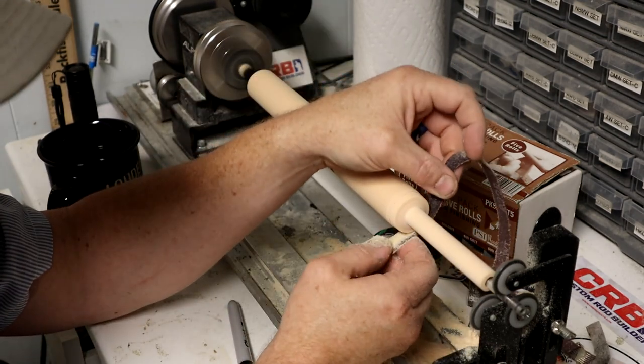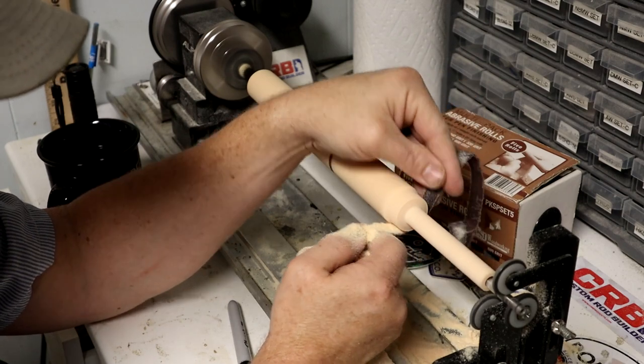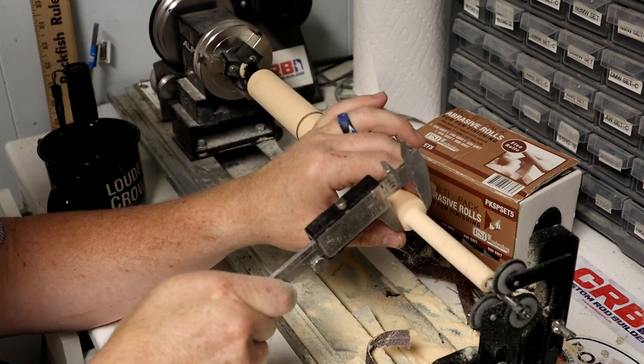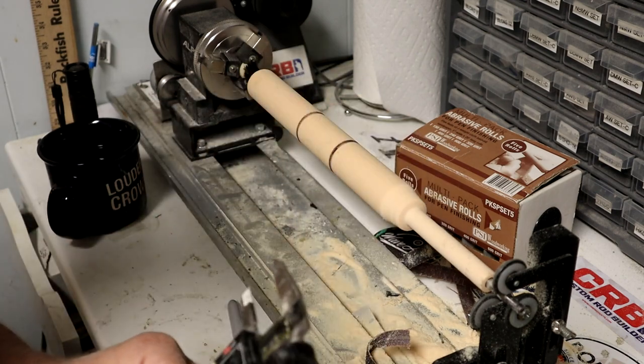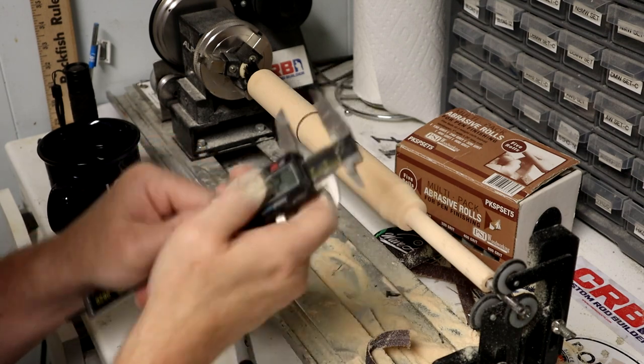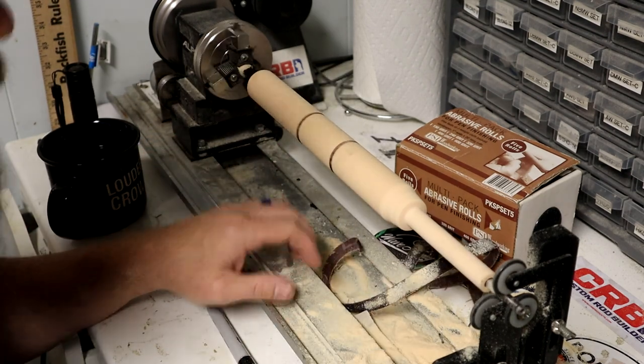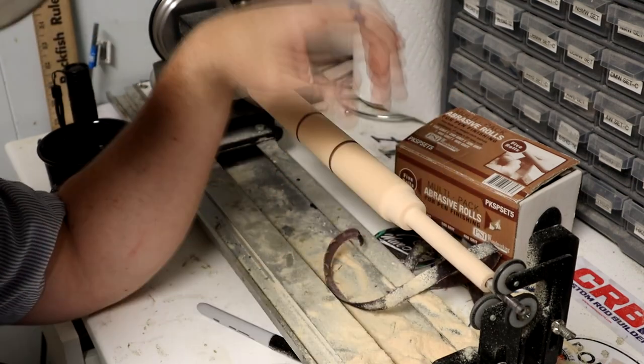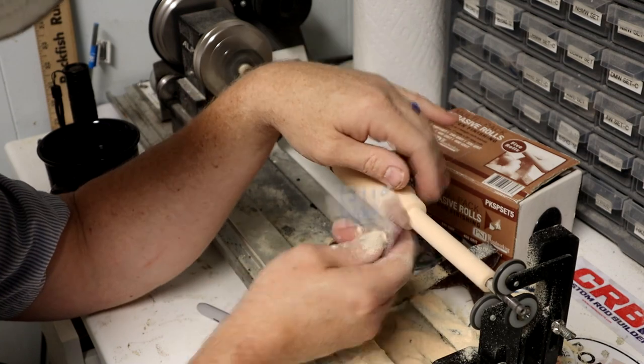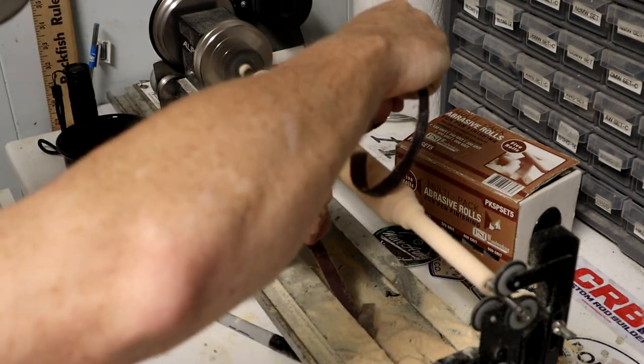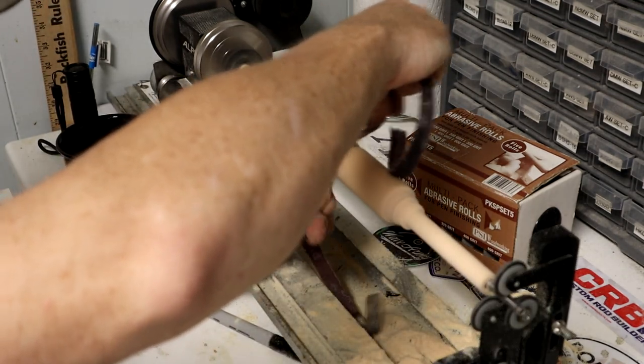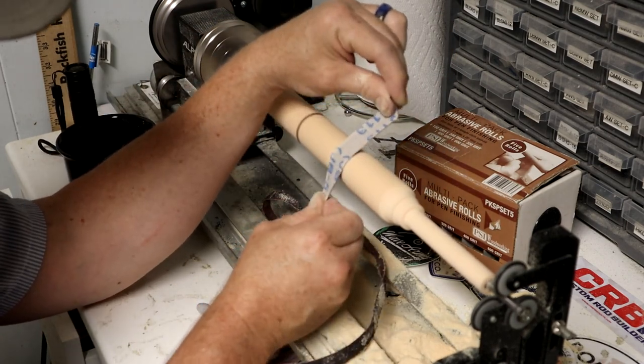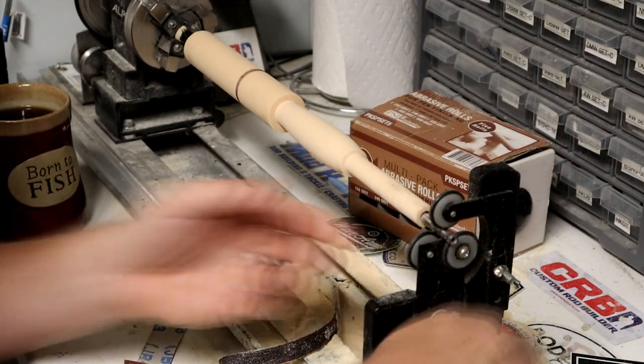Once I have that, I will then work on the outer side of the reel seat that's going to sit against the grip. I'm taking this down to where it needs to be and this will allow an even more positive feel with the rod blank. Keep in mind because this is going to be under the reel seat, I need to be about a millimeter to a millimeter and a half under what I measured.